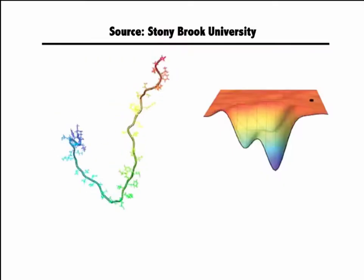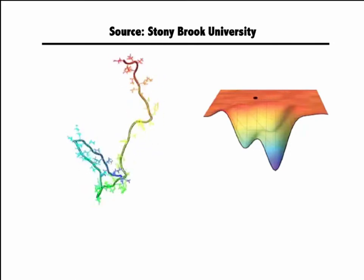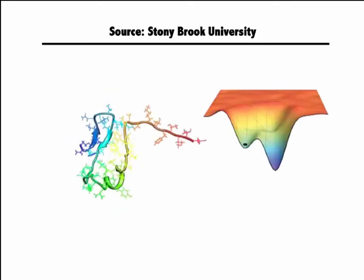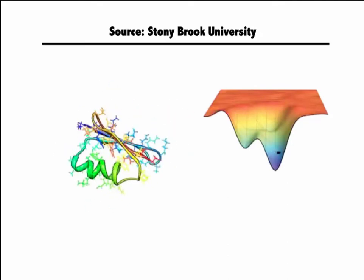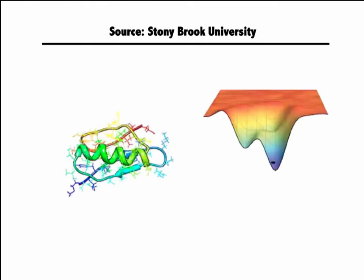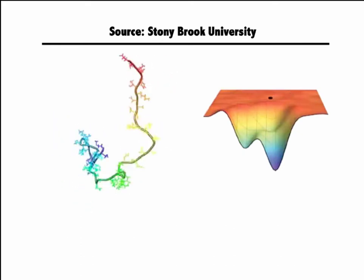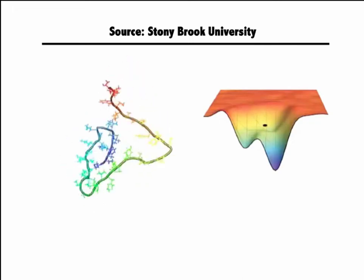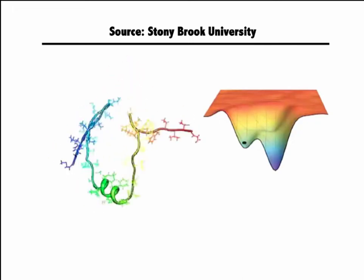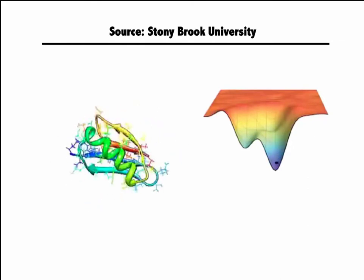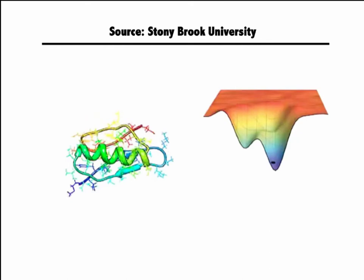This is a very nice illustration of the energy landscape made by Stony Brook University. You can see how the protein samples conformations until it finds the bottom of the landscape where the native conformation is formed. In this animation, as the conformation starts forming, the energy is decreasing, and finally the protein arrives at the bottom — the native conformation — in the properly folded state.